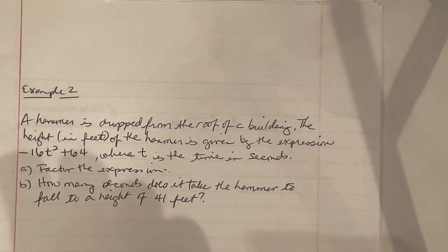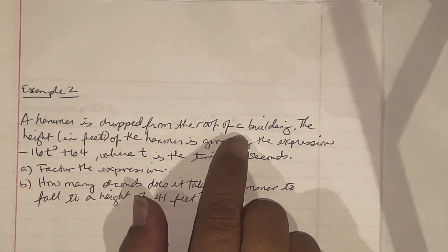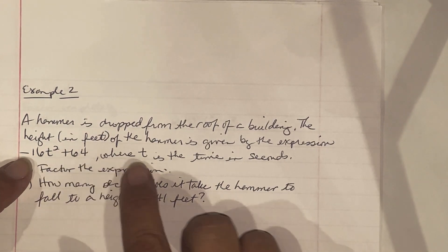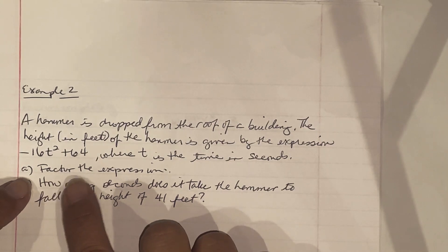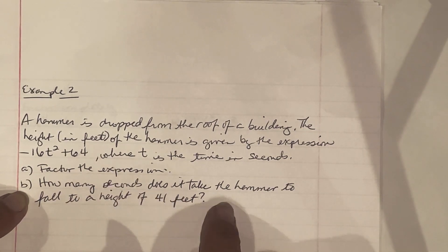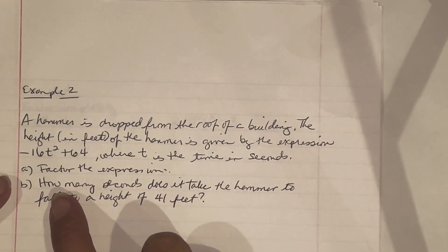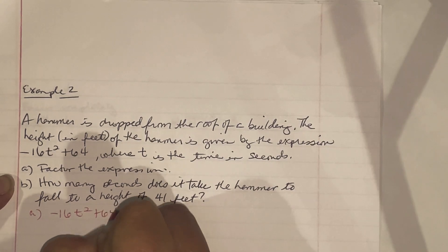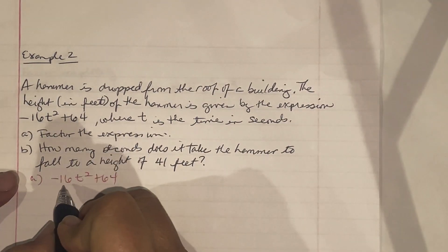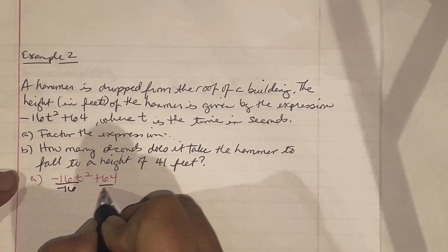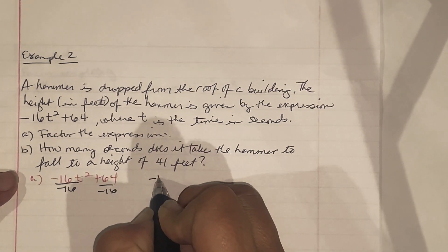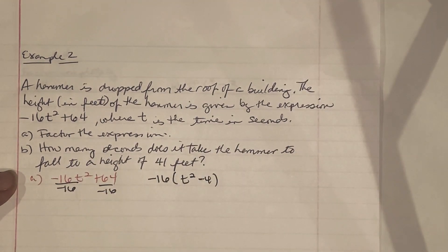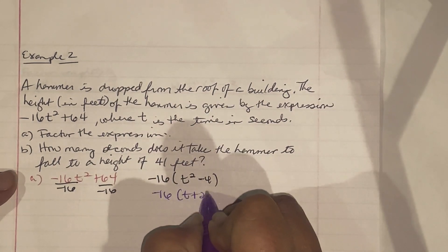Example 2: A hammer is dropped from the roof of a building. The height in feet is given by negative 16t squared plus 64, where t is the time in seconds. For Part A, we factor the expression. We don't like the negative 16, so we factor out negative 16: negative 16 times t squared minus 4. Then applying difference of squares gives negative 16 times t plus 2 times t minus 2.